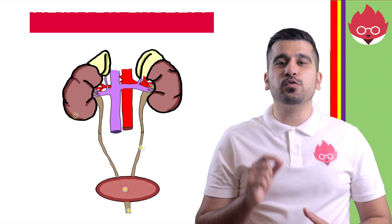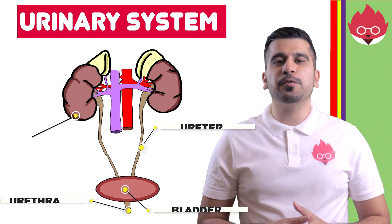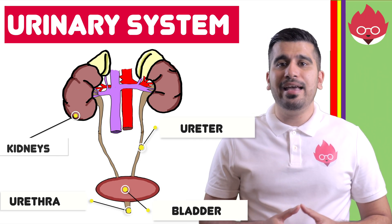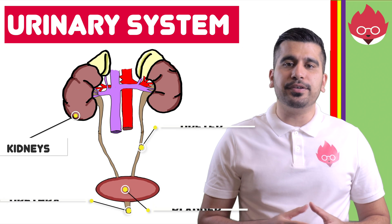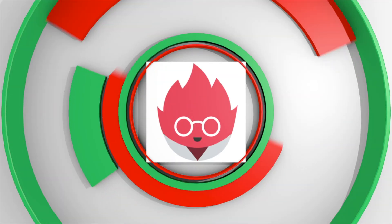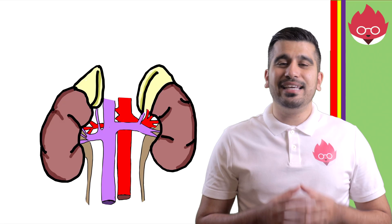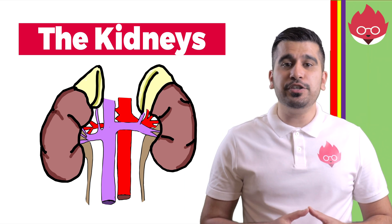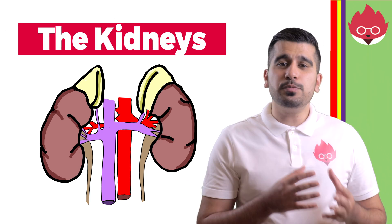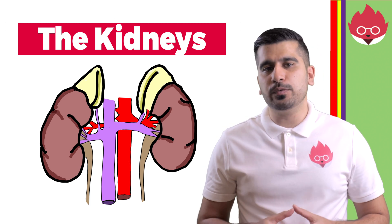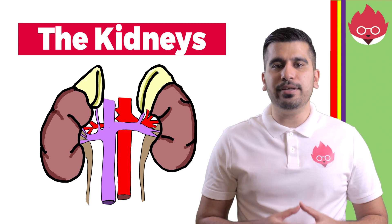The urinary system is responsible for removing waste products from our body. It is made up of the kidneys, the ureter, and the urethra, which connects to the bladder. The kidneys play an important role in excretion and osmoregulation. Osmoregulation is the control of water levels and mineral ions in the blood.